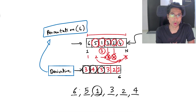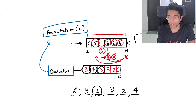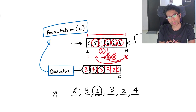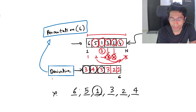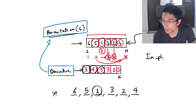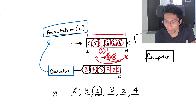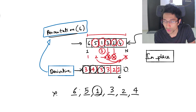Similarly we get 6 and 5 placed in the same way. The trick here is to not use any auxiliary space — what they are asking is to create the original permutation in place, using the same original array to reconstruct the permutation. That is the challenge.